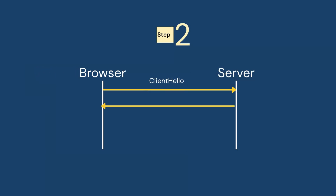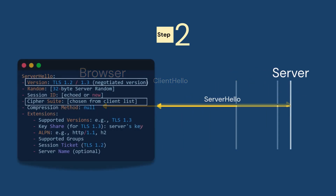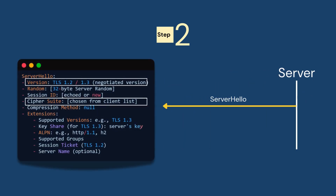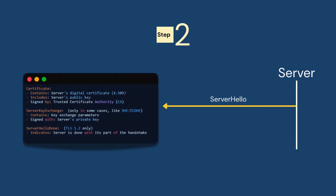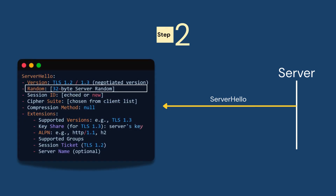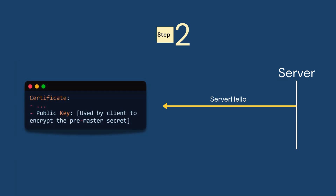Step number two: the server replies. This step is called Server Hello. The server says, 'Nice, I'm in. Let's use TLS version 1.2 and this encryption method. And here's my certificate — this proves I am who I say I am. And here's my random number too.' The public key from the certificate is crucial for encrypting a secret later.